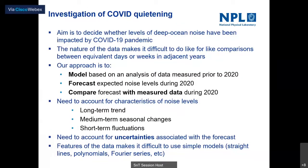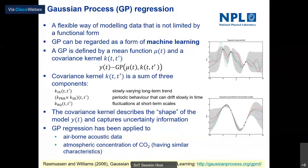Bearing in mind these features — seasonal fluctuations, short-term variability, and longer-term trends — how do we determine if the 2020 data really shows a reduction? The nature of the data makes it difficult to do like-for-like comparisons between equivalent days, weeks, or months in adjacent years. Our approach has been to model the data prior to 2020, forecast the expected noise levels during 2020 using that model, and then compare the forecast with the 2020 measured data. The model needs to account for the observed characteristics and provide uncertainties on the forecast.